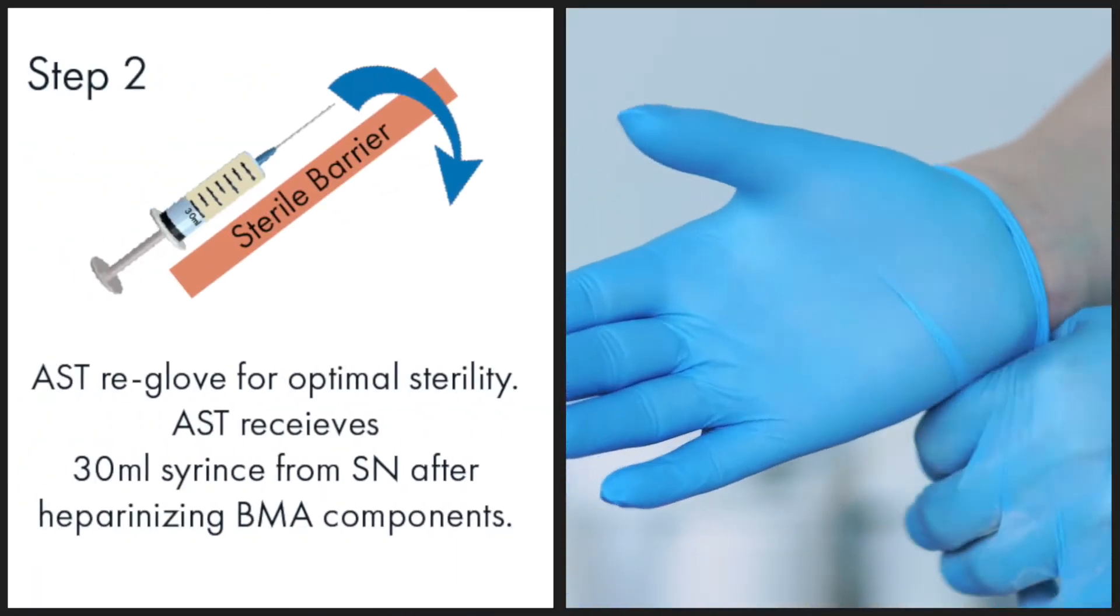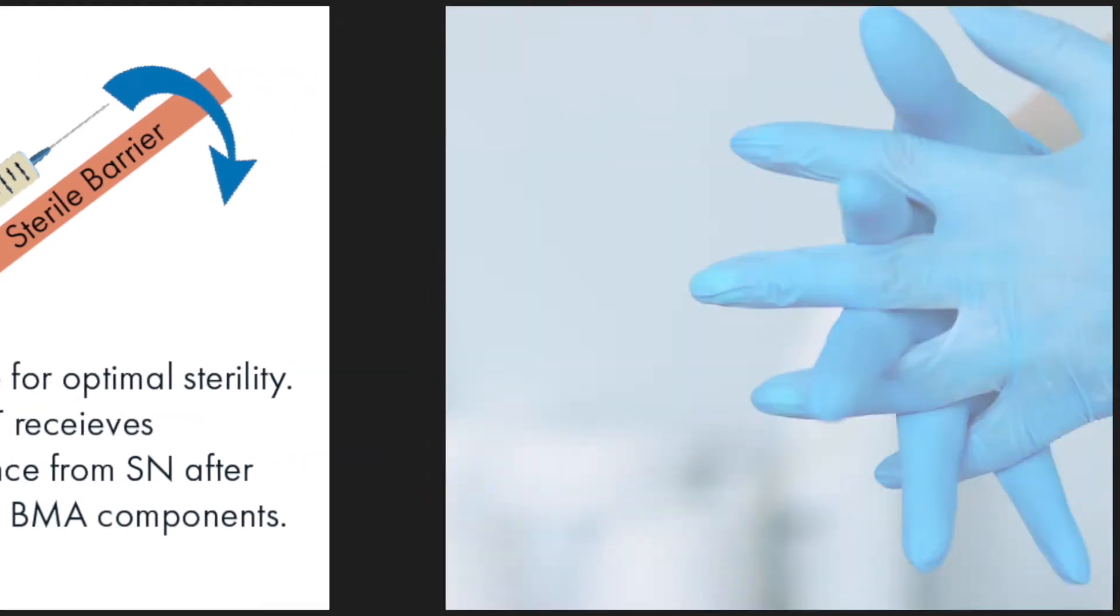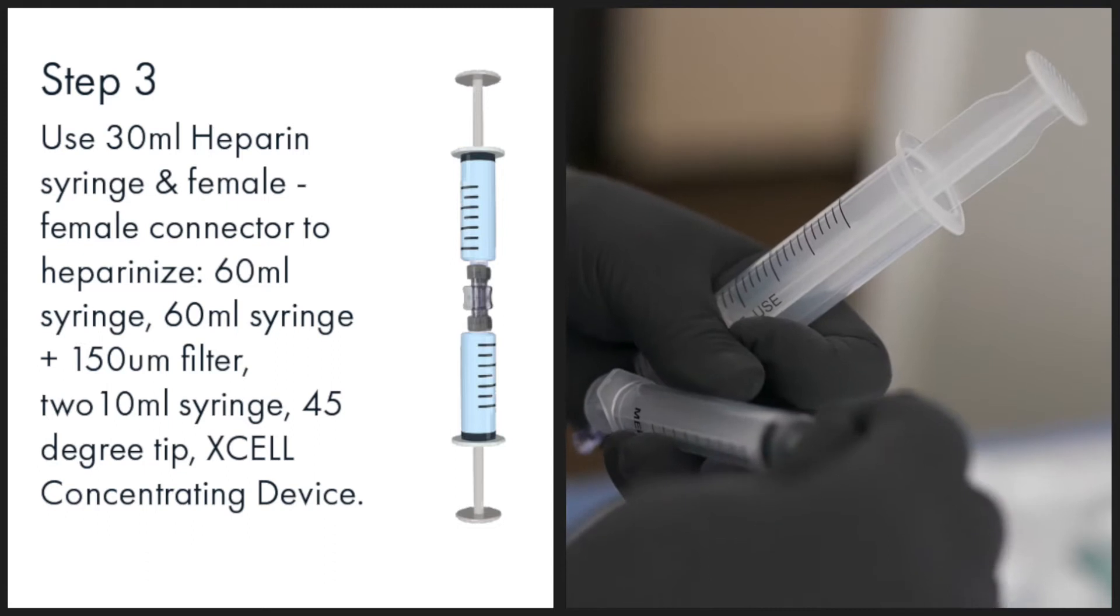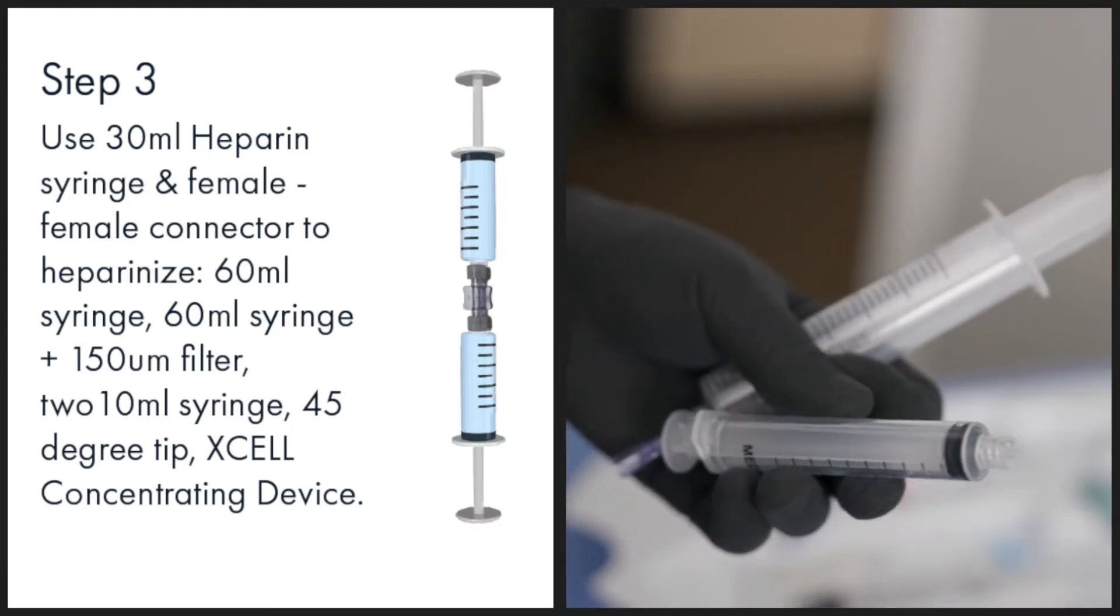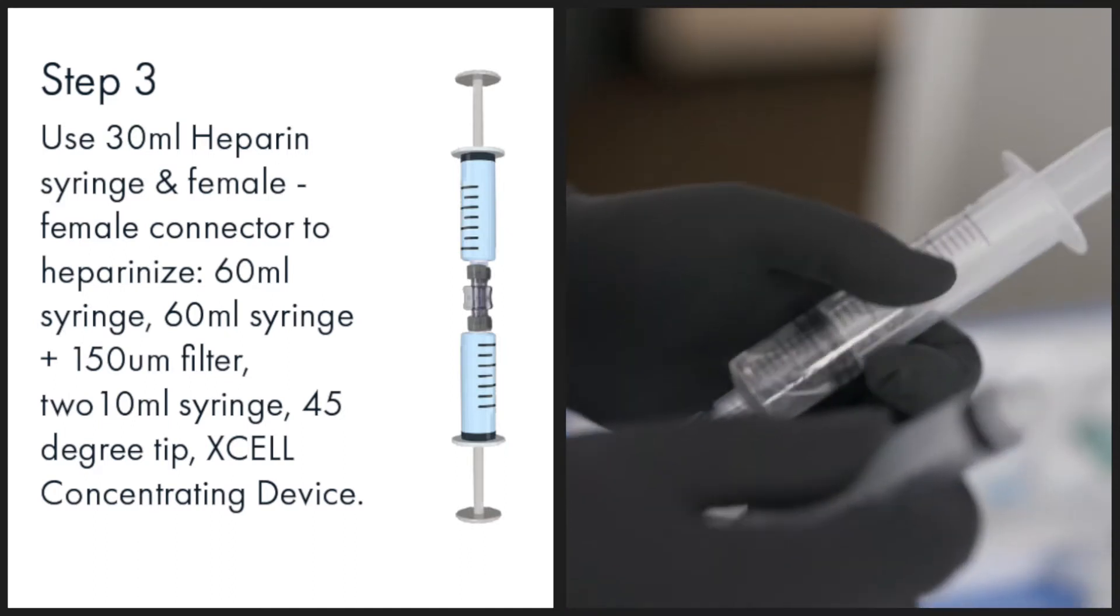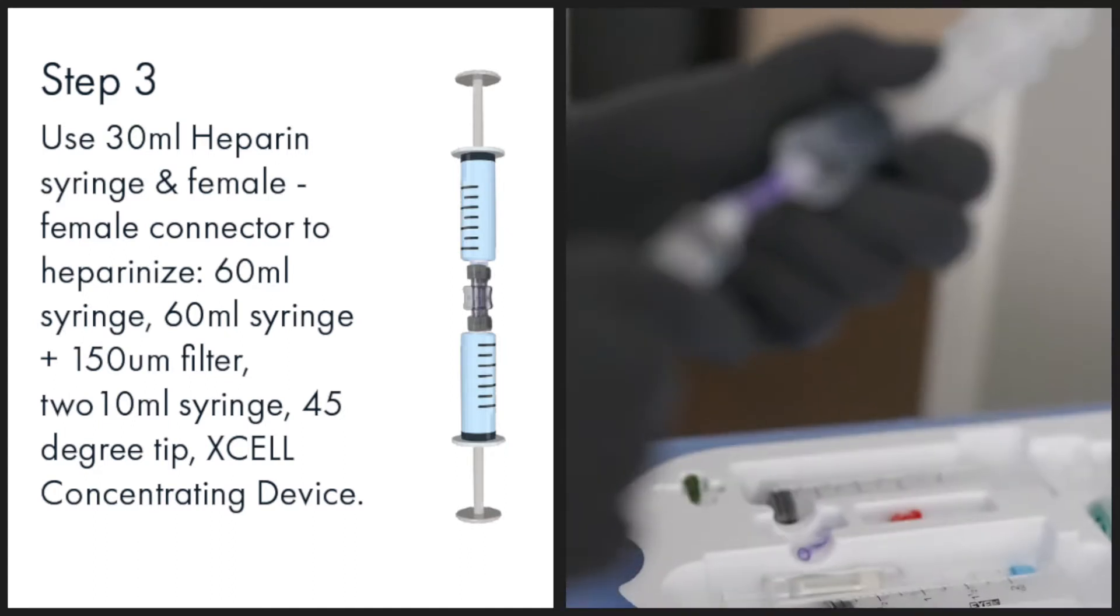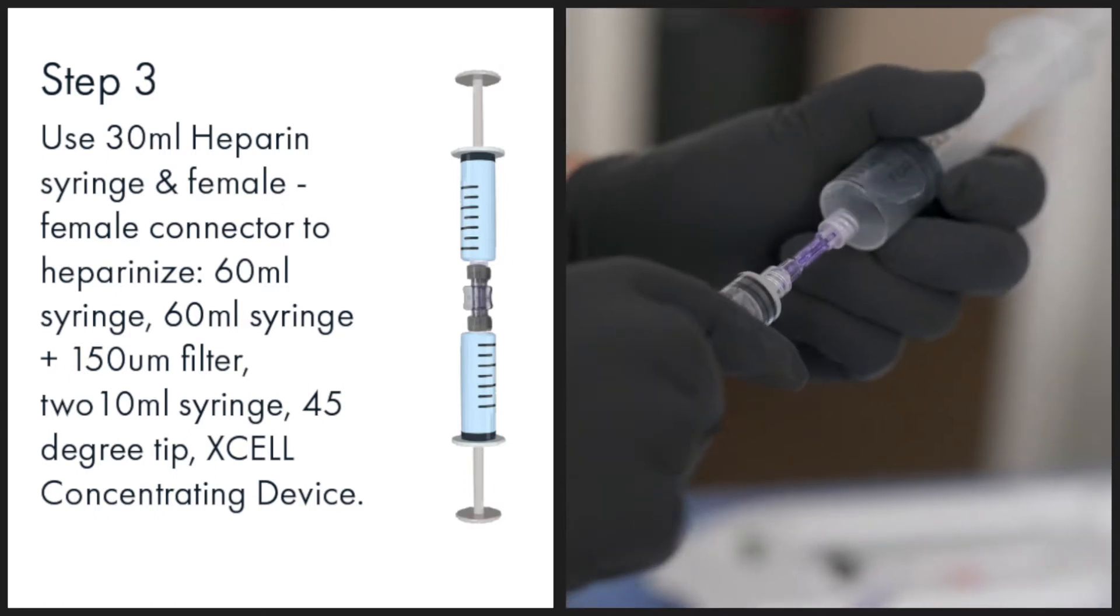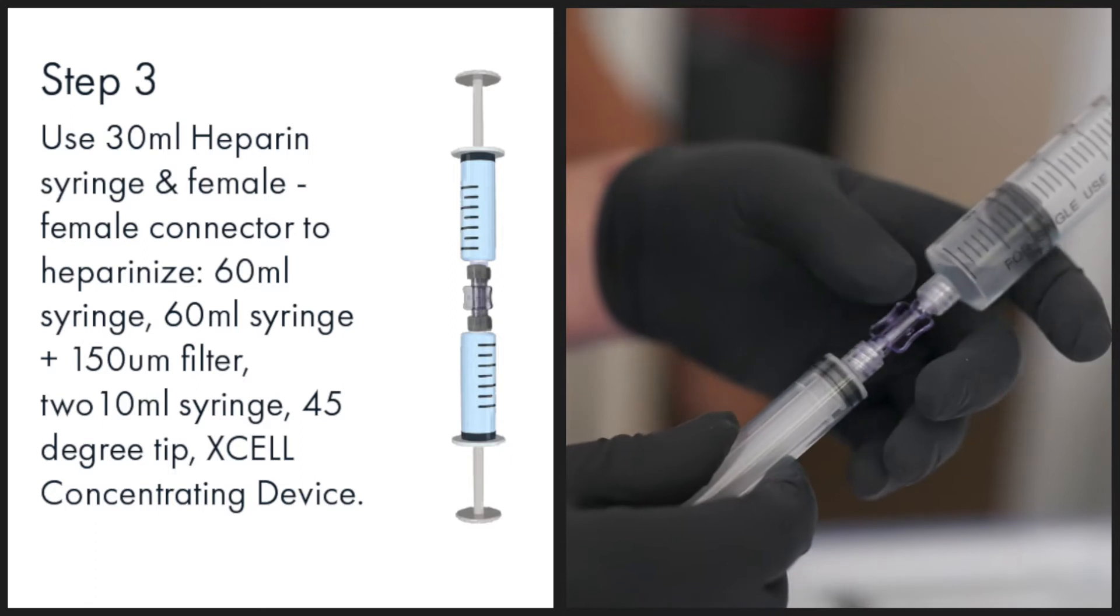Assistant receives 30 milliliter syringe from scrub nurse after heparinizing bone marrow aspirate components. The assistant will use the 30 milliliter heparin syringe and female to female connector to heparinize the 60 milliliter syringe, the 60 milliliter syringe with filter, two 10 milliliter syringes, the 45 degree dispensing tip, and the XL concentrating device.